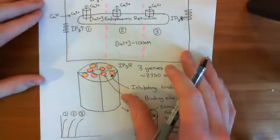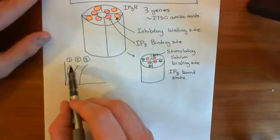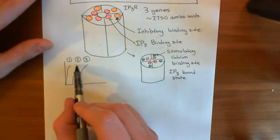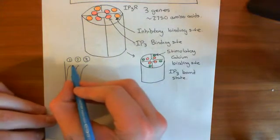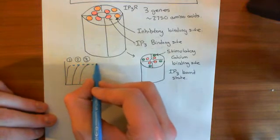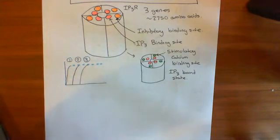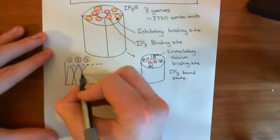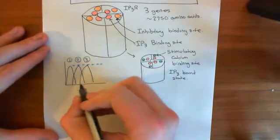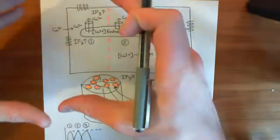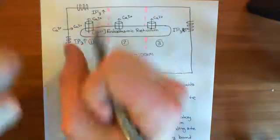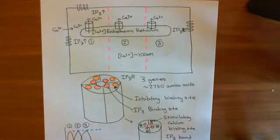The important thing to understand is that after each region's calcium rises, it comes back down — region 1 goes back down, region 2 goes back down, region 3 goes back down. The calcium does not just stay high. The wave propagates forward, but then falls back down. We don't fully understand the mechanisms, but we know the IP3 receptor closes.